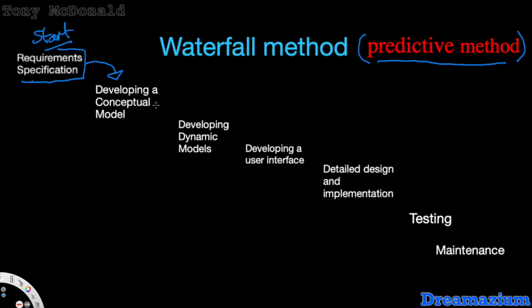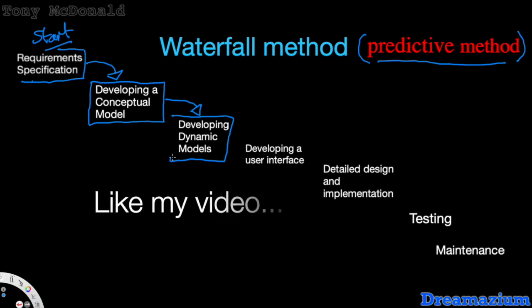In the waterfall method, this is going to be quite heavy documentation because you're not going to come back to it. You want to get it right first time, and then you move on to the next stage, which is developing a conceptual model. You're going to think about the domain and build a conceptual model. Then you move on to developing dynamic models, like sequence diagrams.